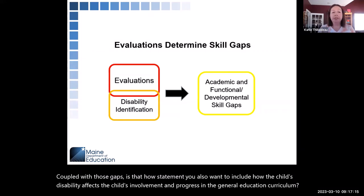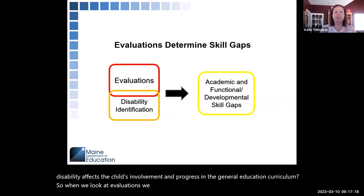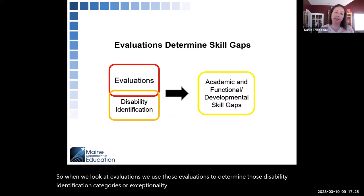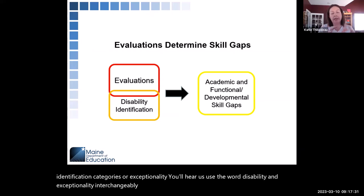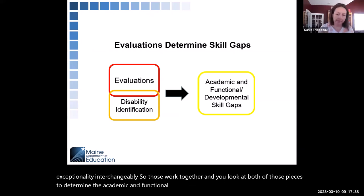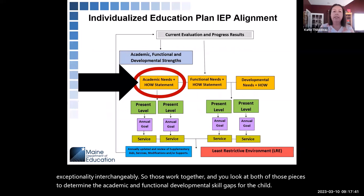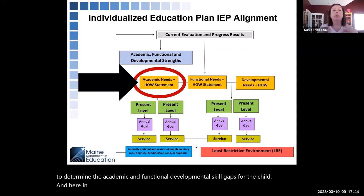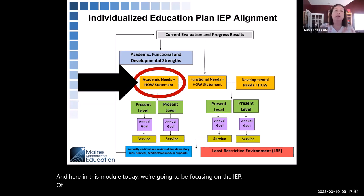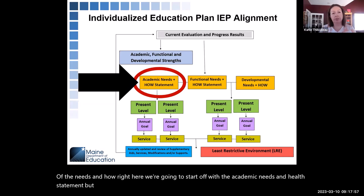When we look at evaluations, we use them to determine disability identification categories, or exceptionality — you'll hear those terms used interchangeably. You look at both pieces to determine the academic and functional developmental skill gaps for the child. In this module today, we're going to be focusing on the IEP piece of the needs and how — starting with academic needs and how, but also covering functional needs and how, and touching on the developmental section.